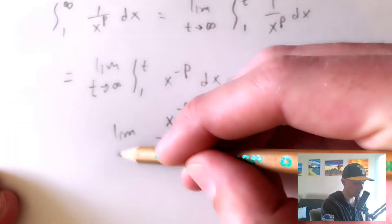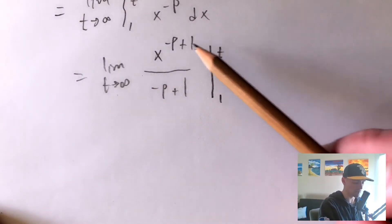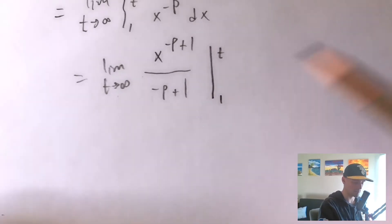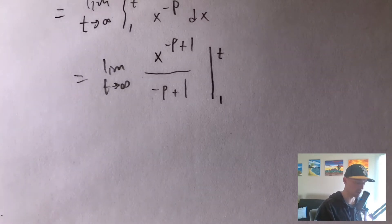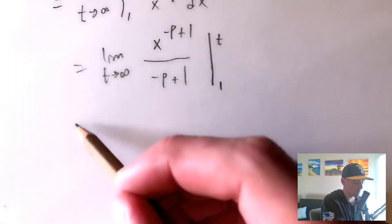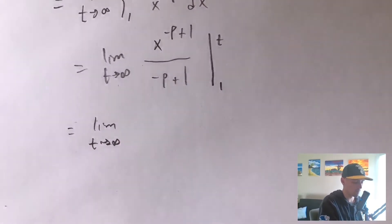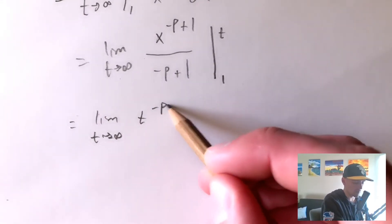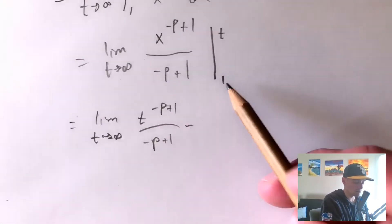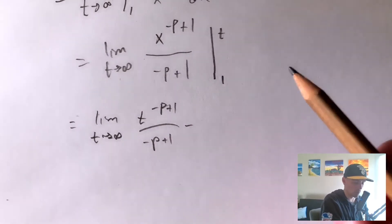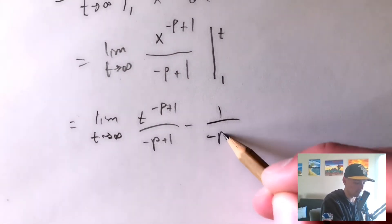We keep our limit as t goes to infinity. To evaluate from 1 to t, we plug in t and then plug in 1 and take the difference. Remember, p is a constant — we're plugging these in for x, not p. So we get the limit as t goes to infinity of t to the negative p plus 1 over negative p plus 1, minus 1 to the negative p plus 1 over negative p plus 1. Since 1 to any power is 1, the second term is just 1 over negative p plus 1.